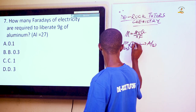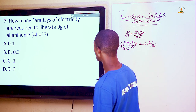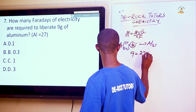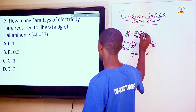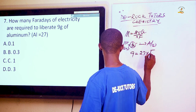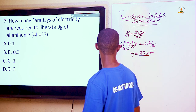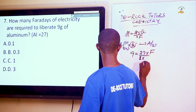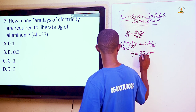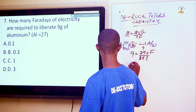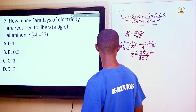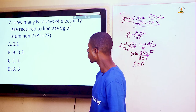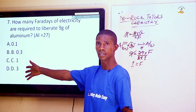Substituting: n = 3, mass = 9, atomic mass = 27. We have 9 = (27 × Q) / (3 × F). Rearranging, 3 can go into 27 nine times, and cancelling on both sides gives the Faraday value as 1. So the answer is C, which is 1 Faraday.